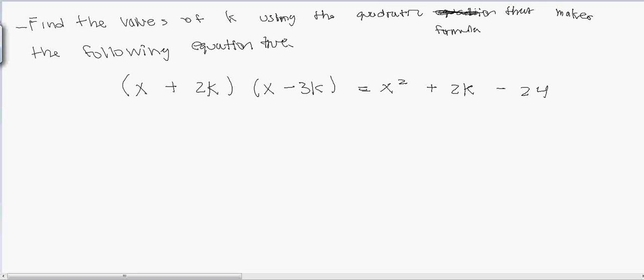Alright, so now we will be finding the value of k using the quadratic formula. I was going to write equation, but it's more like a formula that makes the following equation true. The equation is (x + 2k)(x - 3k) = x² + 2k - 24.